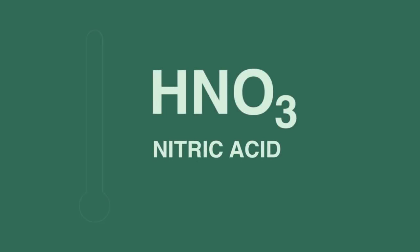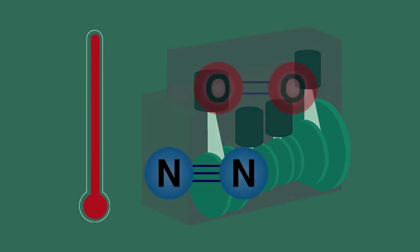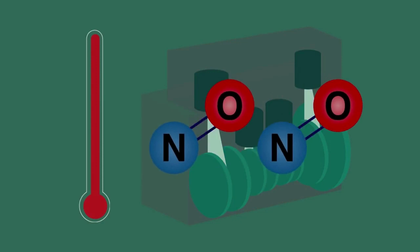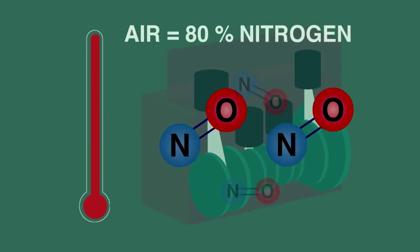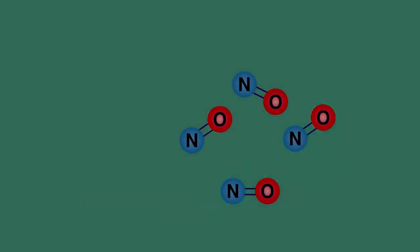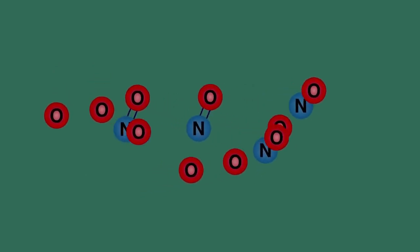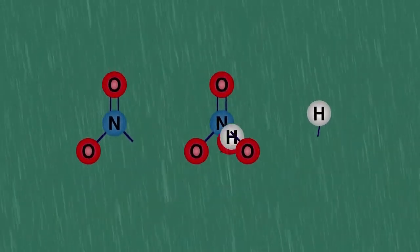Let's now consider how nitric acid gets into the rain. In the high temperature conditions in the cylinders of our motor vehicles, a small amount of nitrogen and oxygen from the air can react. Remember that air taken in to combust the fuel is nearly 80% nitrogen. So exhaust gases from vehicles contain small but significant amounts of nitrogen oxides. Once the oxides of nitrogen are in the air, they react with more oxygen, just like we saw with sulfur dioxide, and dissolve in the rainwater to form nitric acid.